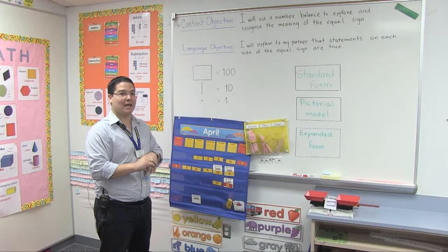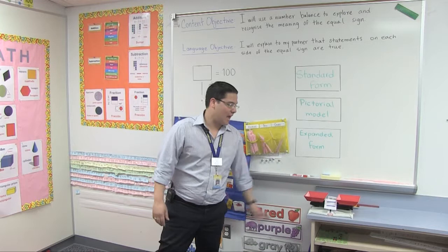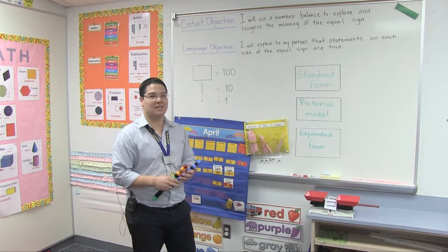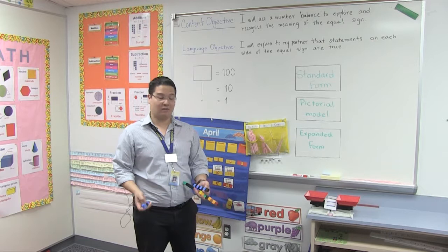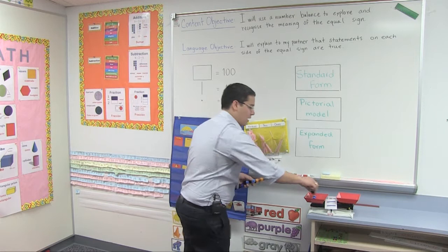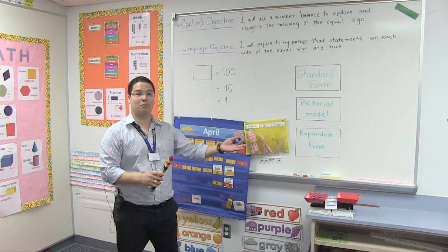They know how to add, they know how to subtract, but sometimes they don't know exactly what the equal sign means. So I brought some number balances and they can play with unifix cubes to make a number sentence. If they are going to say that three plus five equals eight, they can put in one part of the balance three unifix cubes and then five more. And they say okay, three plus five is eight.